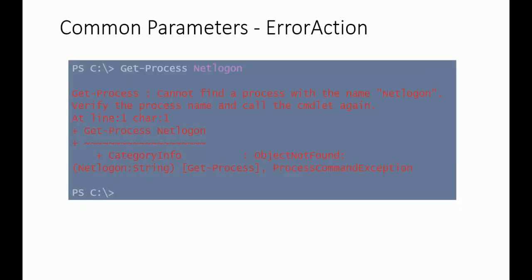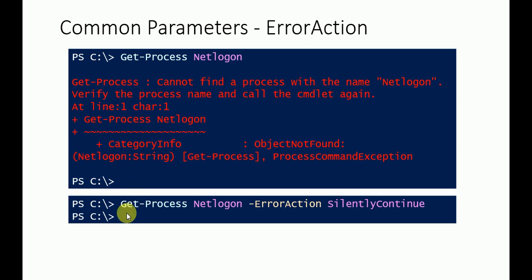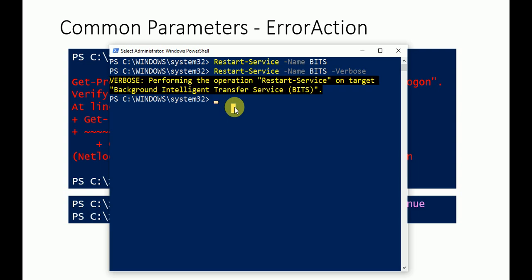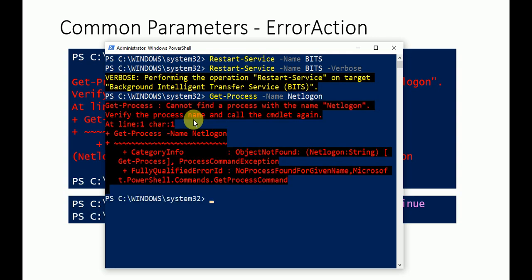Let's move to the next slide: common parameters — ErrorAction. Suppose you are getting an error with your command. Here is an example: Get-Process -Name netlogon -ErrorAction SilentlyContinue. If you use ErrorAction SilentlyContinue, you will not get the error message in your output. Let's use PowerShell here. I'll use Get-Process -Name netlogon — netlogon is a process not running on my system, which is why I'm using it as an example. To deal with the error, I'll use -ErrorAction and use the tab key to see available switches like Continue.